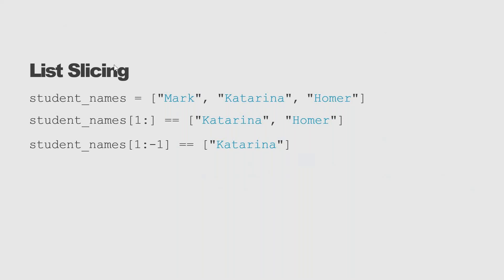You can also slice list elements. For example, 'student_names[1:]' displays from index 1 to the last. 'student_names[1:-1]' displays from index 1 up to but not including the last element. So index 1 is Katrina and the result would display Katrina.